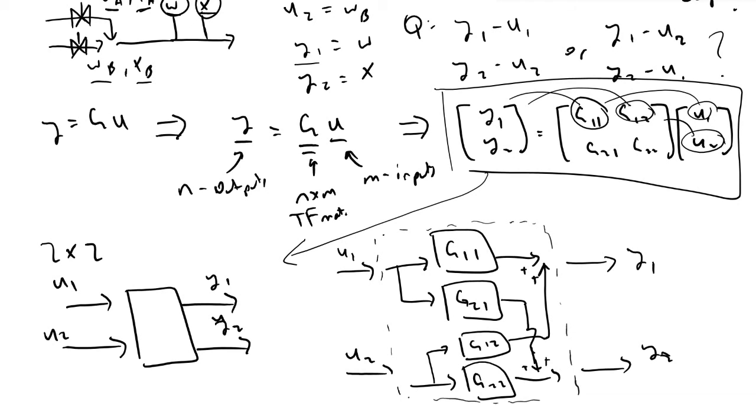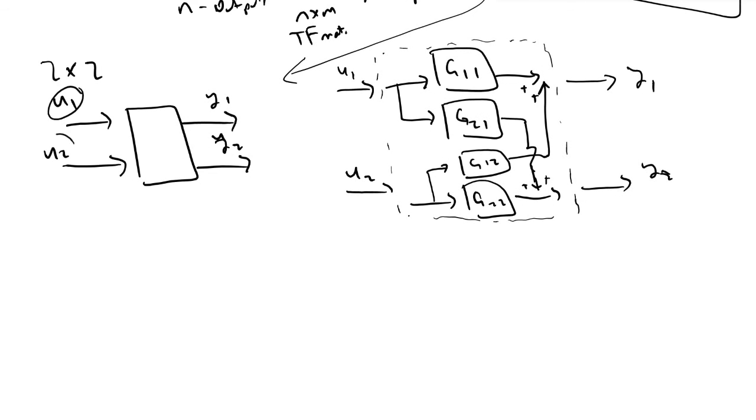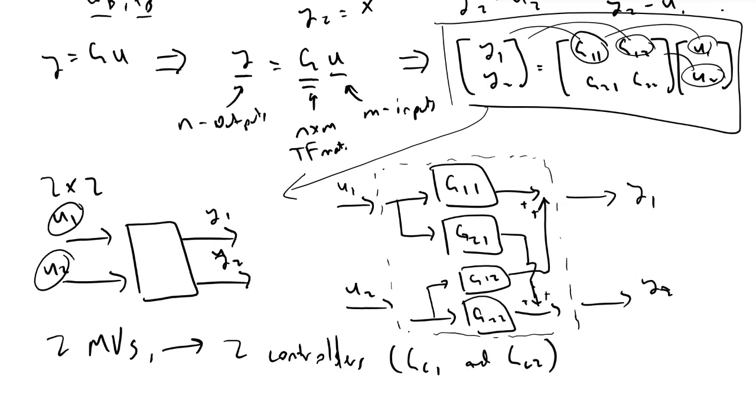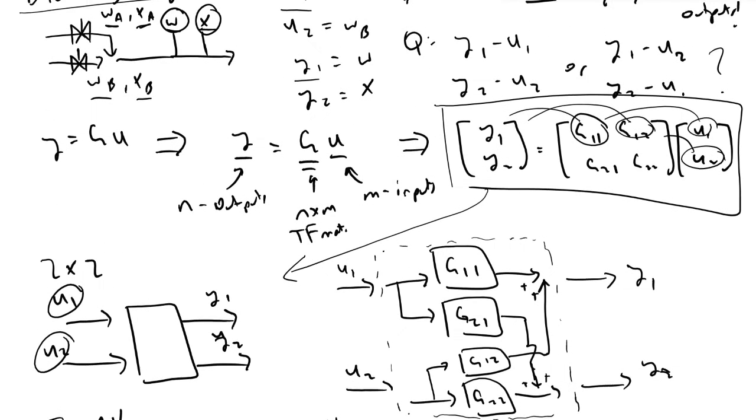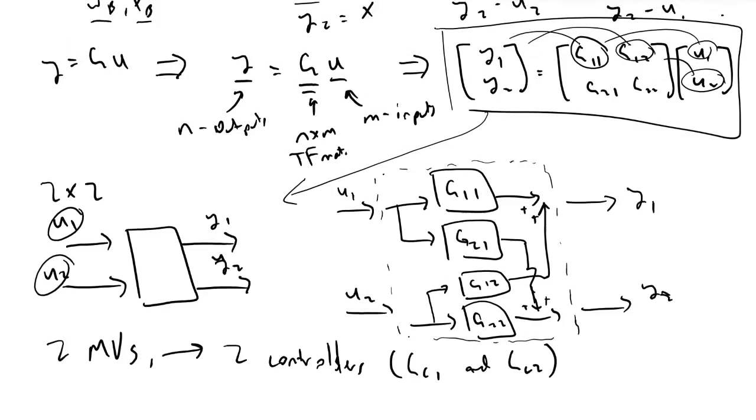Our black box now begins to make a little bit more sense in terms of the control block diagrams involved. The question I begin to ask is, now that we have two inputs u1 and u2, we have two manipulated variables, we're going to design two controllers, gc1 and gc2. So the question is whether or not you want to structure pairing these inputs in a particular fashion.